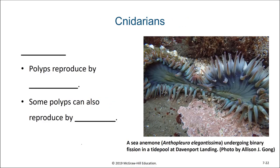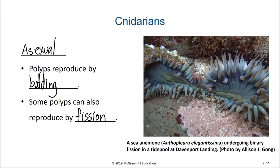Cnidarians are also capable of asexual reproduction. This could be through the polyps themselves, which can reproduce by budding. Some polyps can also reproduce by fission. Budding is when a smaller individual starts growing off the body of a larger one, but fission is when a large adult simply breaks or divides into two equally sized individuals.